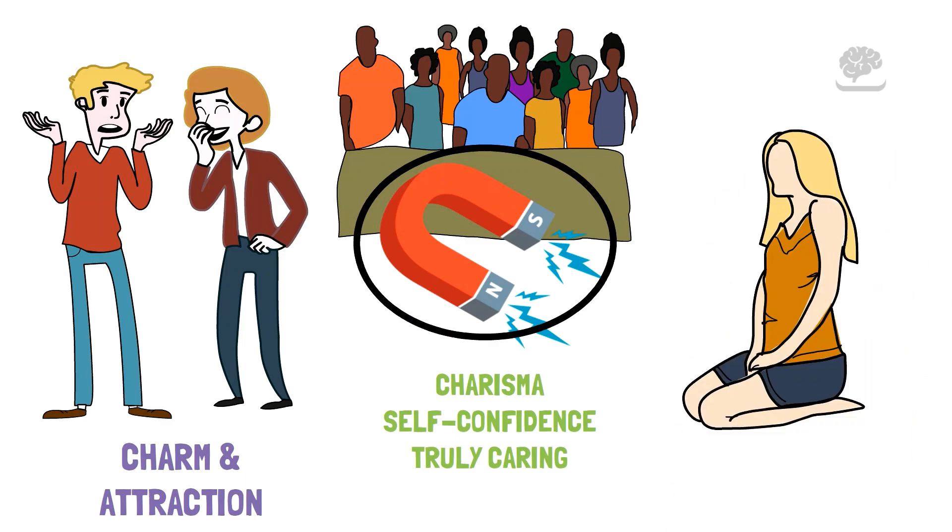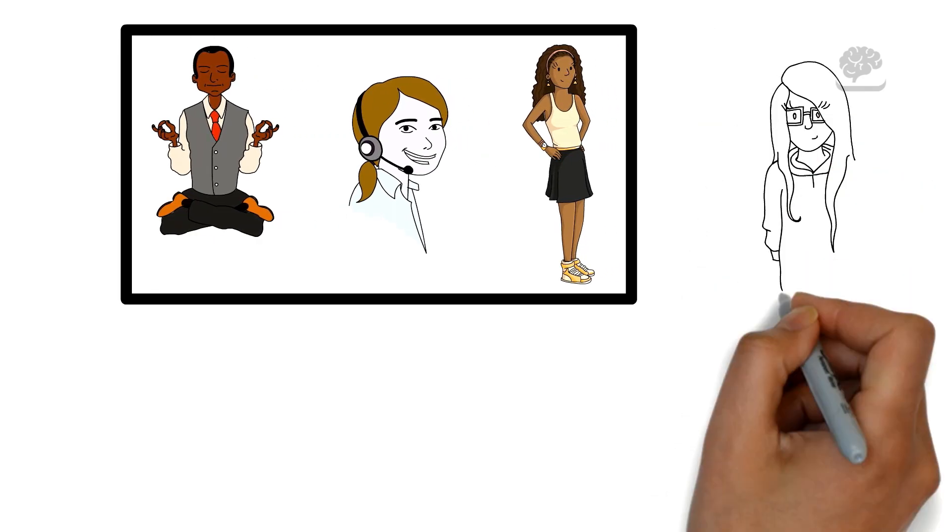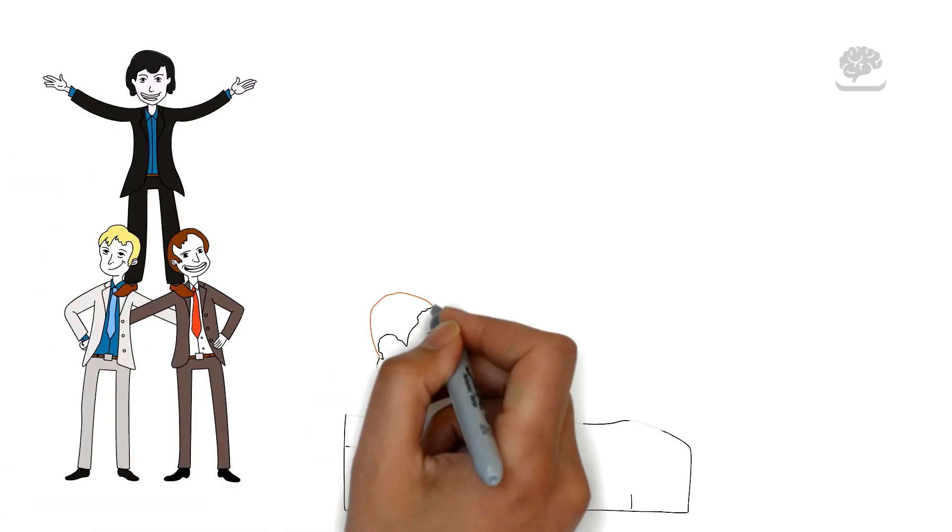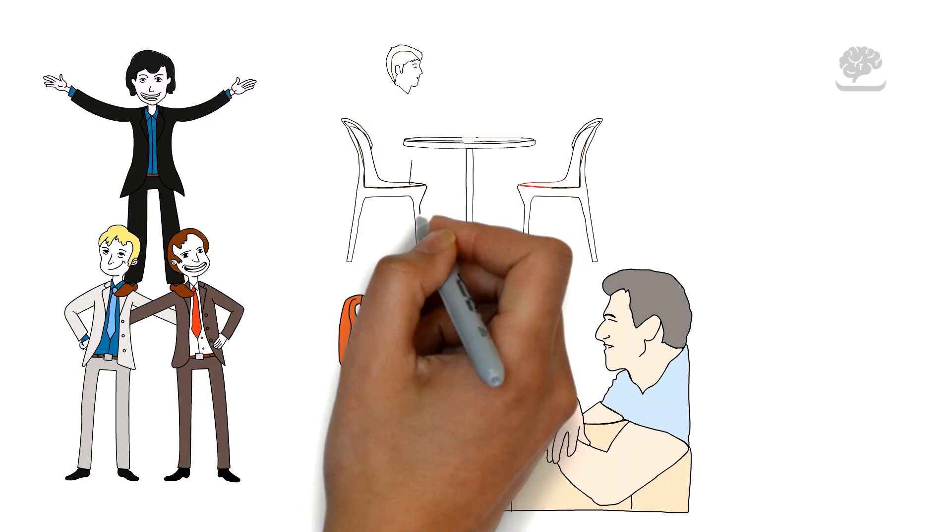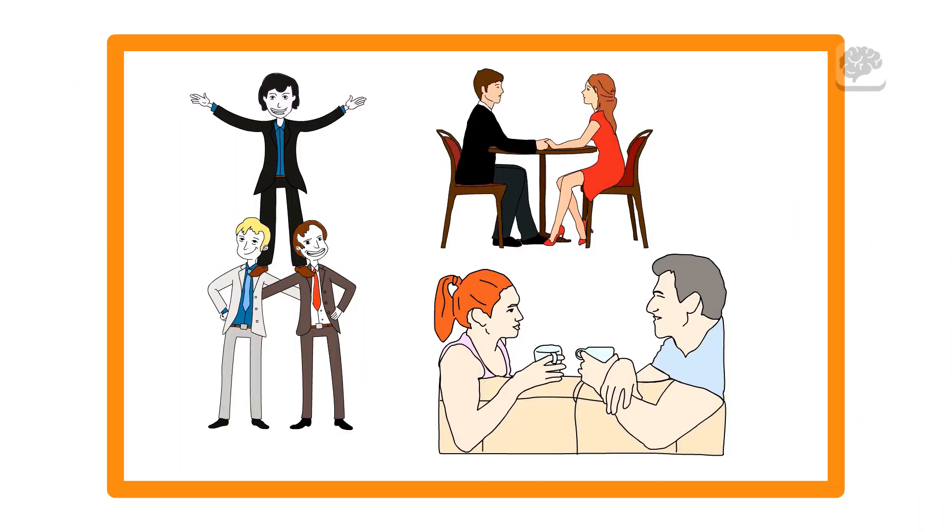It comes from the positive energy you give off, making an atmosphere where people want to be close to you. You make others feel relaxed, listened to, and important, which draws them to you. When people want to be around you, it shows your skill in making a friendly and interesting environment. They want to connect with you because they believe being near you will make their social time better. Accept this as proof of the special traits that make you attractive and enjoyable for others.